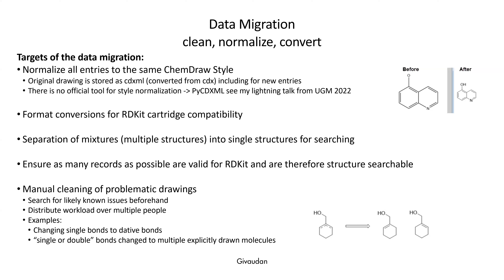We also had to do preparation for mixture handling, and the main goal was to have as many structures valid for the Artkit as possible. In some cases this meant manual cleaning of problematic drawings. Some problems were known beforehand; others were found through iterations of the data migration. That workload can be distributed among multiple people. It's a balance whether to automate — if you automate, you also need automated validation of the changes. Manual work can actually be faster for hundreds of structures, not thousands, so it's feasible.